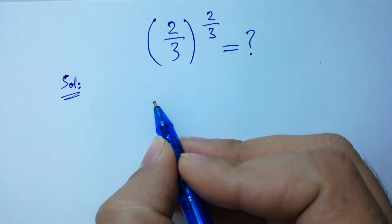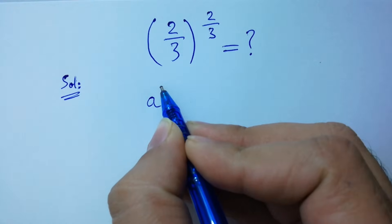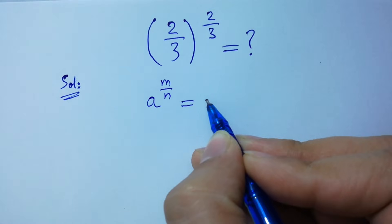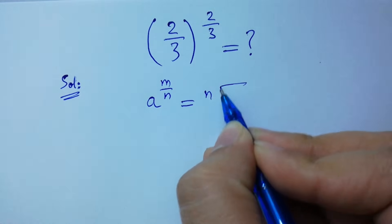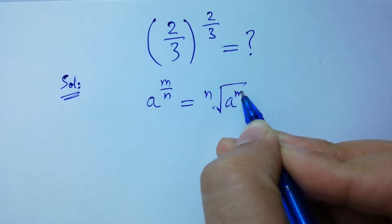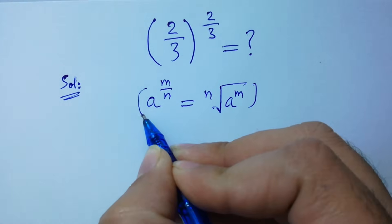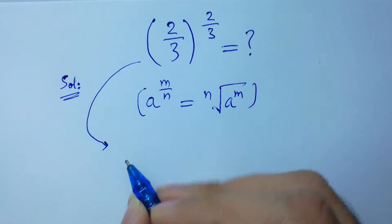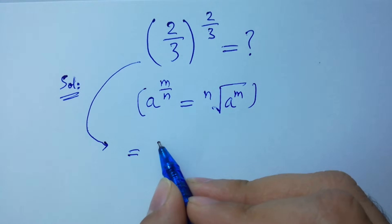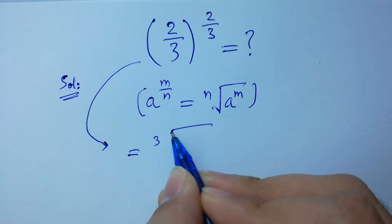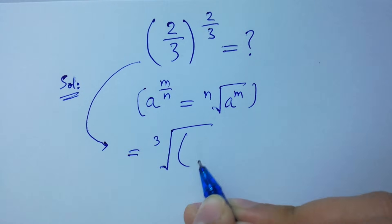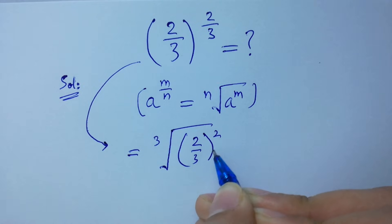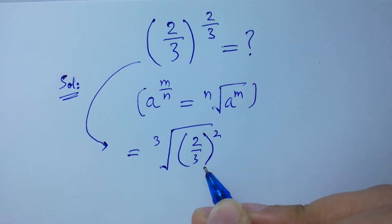Since a to the power m over n equals n-th root of a to the power m, so this is the same as cube root of (2 over 3) to the power 2. I hope you understood.